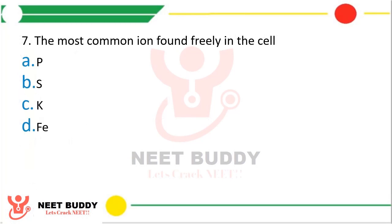Question 7: The most common ion found freely in the cell is? Option A, phosphorus. Option B, sulphur. Option C, potassium. Option D, iron. The correct answer is Option C — that is potassium.